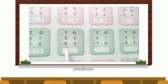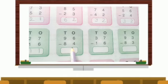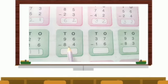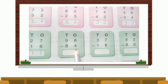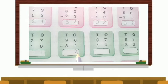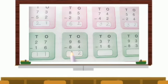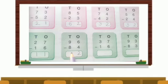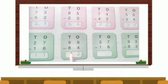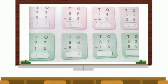96 minus 84. We will take the ones house. 6 minus 4. 6 minus 4 is 2. 9 minus 8. 9 minus 8 is 1.